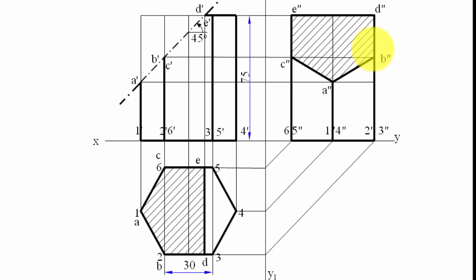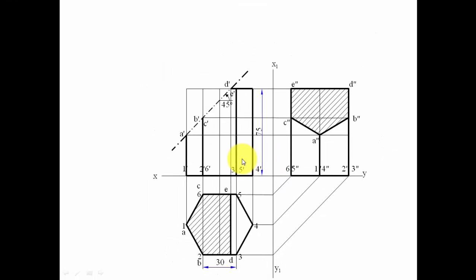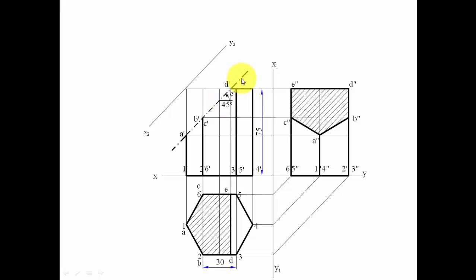To find the true shape, we look at the object perpendicularly toward the cutting plane. We bring in an auxiliary plane X2Y2 that is absolutely parallel to the cutting plane. Then we project lines from A-dash, B-dash, C-dash, D-dash, and E-dash perpendicularly — at 90 degrees — to this auxiliary plane.